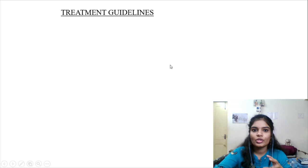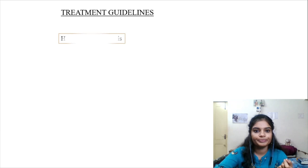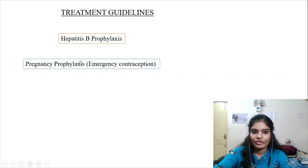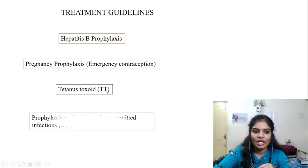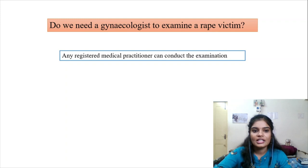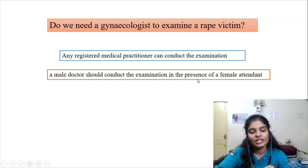For treatment guidelines when you face a rape victim: first, hepatitis B prophylaxis — give 0.06 ml of hepatitis B immunoglobulin within 72 hours of the sexual violence act. Second, pregnancy prophylaxis — the Government of India guidelines recommend levonorgestrel as emergency contraception. Third, tetanus toxoid injection. Fourth, prophylaxis against sexually transmitted infections. Also, any registered medical practitioner can conduct the examination — not just a gynecologist. In emergency, even a male doctor can examine in the presence of a female attendant.